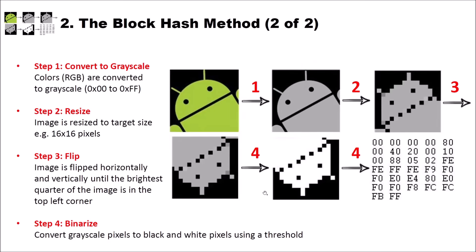Finally, we binarize the image in step four. That means we have a threshold, and if the pixel's grayscale value is above this threshold we set it to white, and if it's below this threshold we set it to black. This 16 by 16 pixel image can then be read as our hash value.